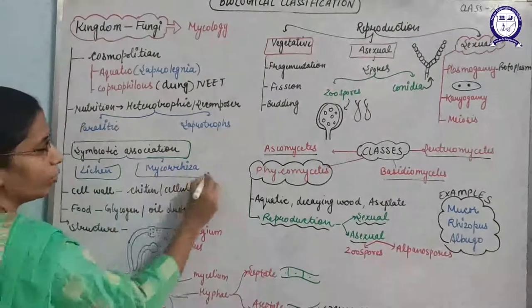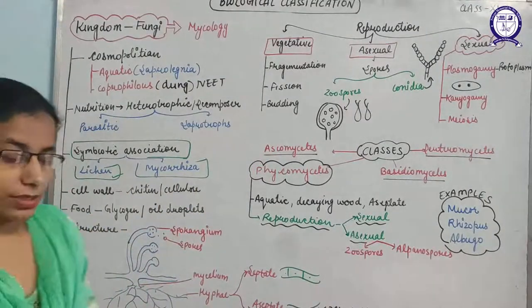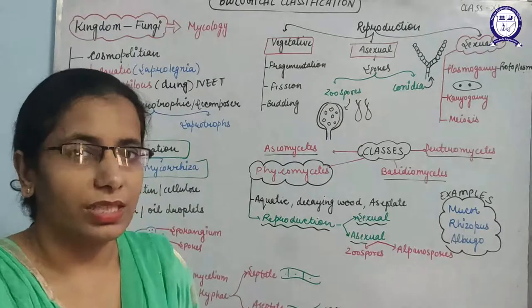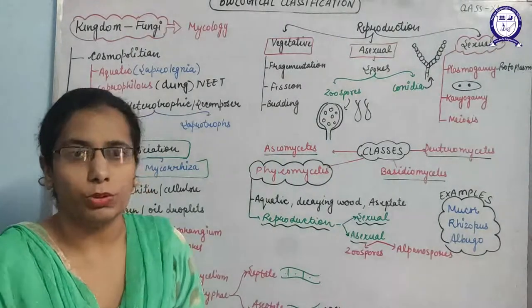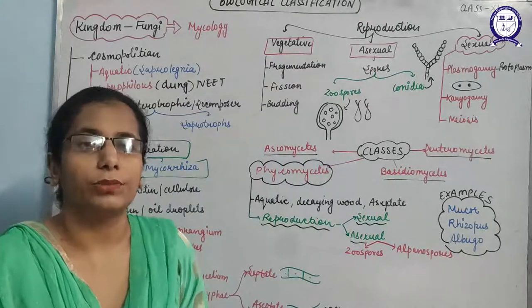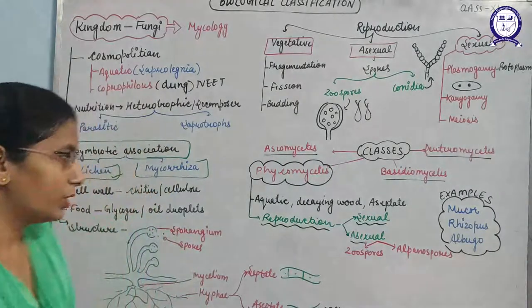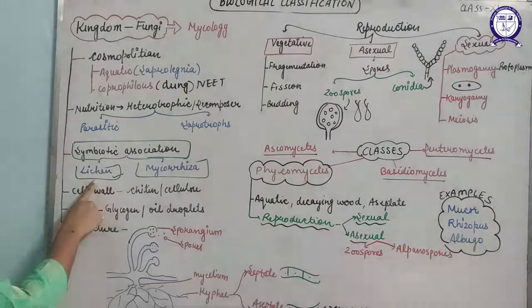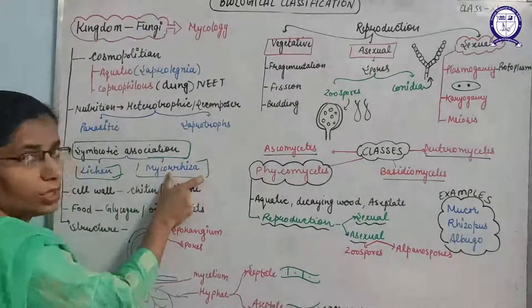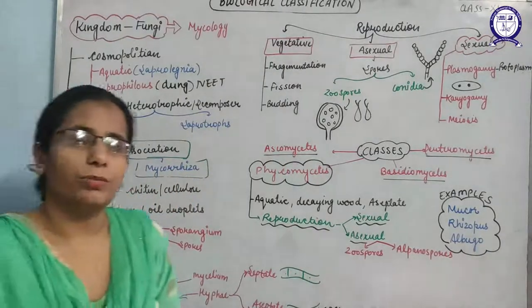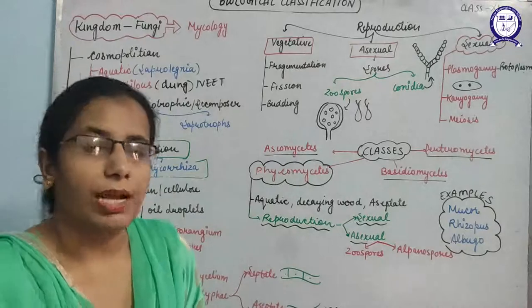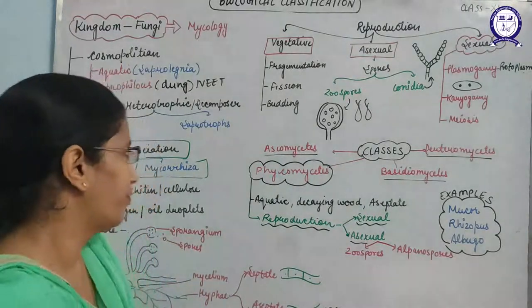Fungus shows symbiotic association in the form of lichen and mycorrhizae. Lichen is the symbiotic association of algae and fungi. In ecological succession, lichen plays a major role — it degrades the surface of rocks to form soil, which acts as habitat for bryophytes and pteridophytes. Mycorrhiza — 'myko' means fungus and 'rhiza' means roots — is the symbiotic association between fungus and roots of higher plants, where fungus provides essential minerals to plants and plants provide space for the fungus.